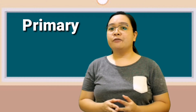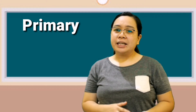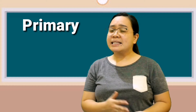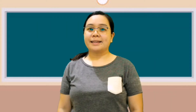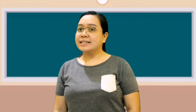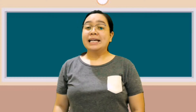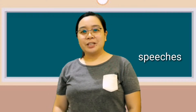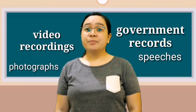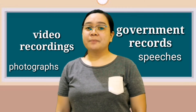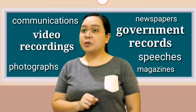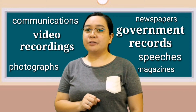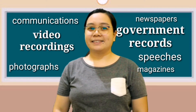Sources of information are classified as primary if they are authentic and have not been subjected to evaluation or assessment. These report discoveries, sharing of information, and first-hand accounts. These are information written at a certain time or period of research. Definition of primary sources vary depending on the context and/or disciplines. Examples include speeches, video recordings, photographs, government records, communication, and newspapers or magazines portraying information from eyewitnesses.